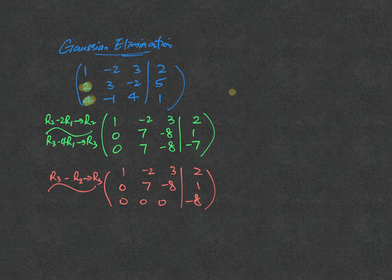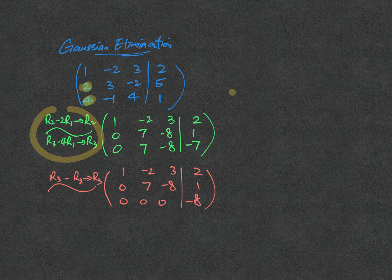Of course, first of all, we want to cancel 2 and 4 by the suitable operations of row 2 and row 3. After that...